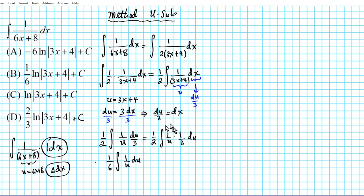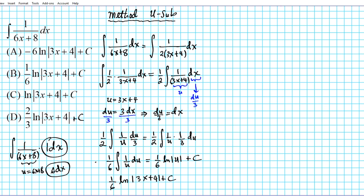Always factor out as much as possible and simplify your integral before integrating, because the simpler the integrand the simpler the integration process. Now using integration rules, the integral of one over U is the natural logarithm of the absolute value of U. So we have one sixth times the natural log of the absolute value of U plus C. Back-substituting U equals three X plus four, we get one sixth times the natural logarithm of the absolute value of (three X plus four) plus C. The answer to question number two is option letter B.